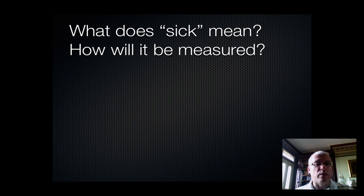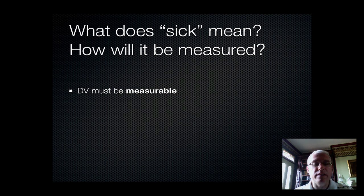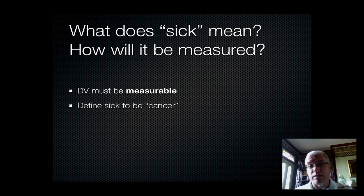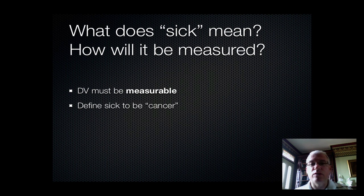We've got a problem: what exactly does 'sick' mean — just not feeling well, or catching a disease? In order to measure it, we need a better definition. So let's make this dependent variable measurable by defining it as cancer. If the person smokes cigarettes and gets any type of cancer — lung cancer, mouth cancer, throat cancer, or any other cancers associated with tobacco — we count that as a yes, and all others as no. So we've identified an IV that we can control, which is cigarette smoke exposure, and a DV that we can actually count, which is getting cancer.